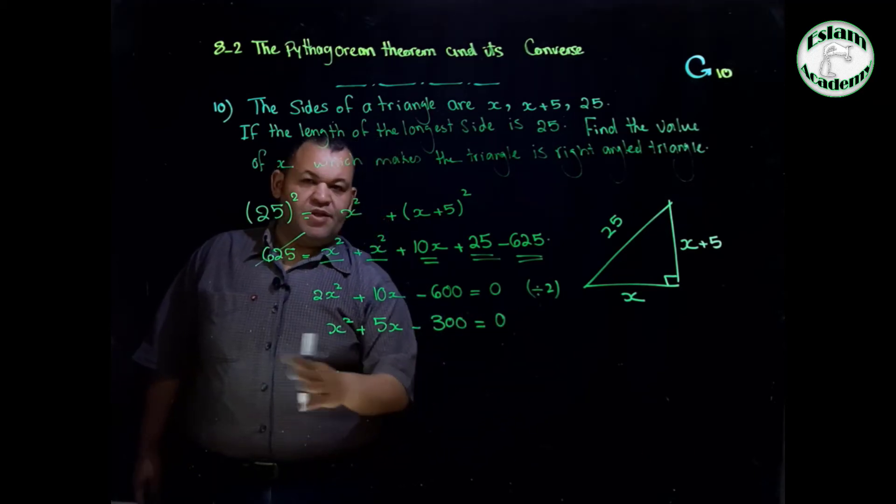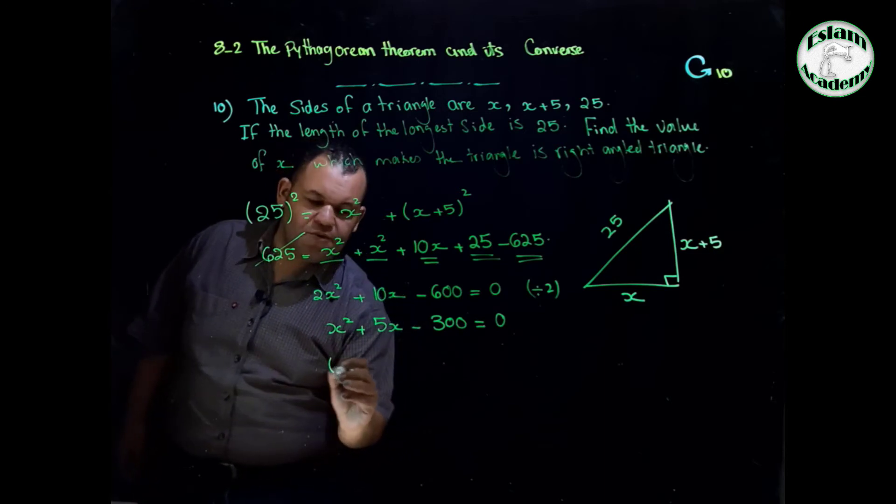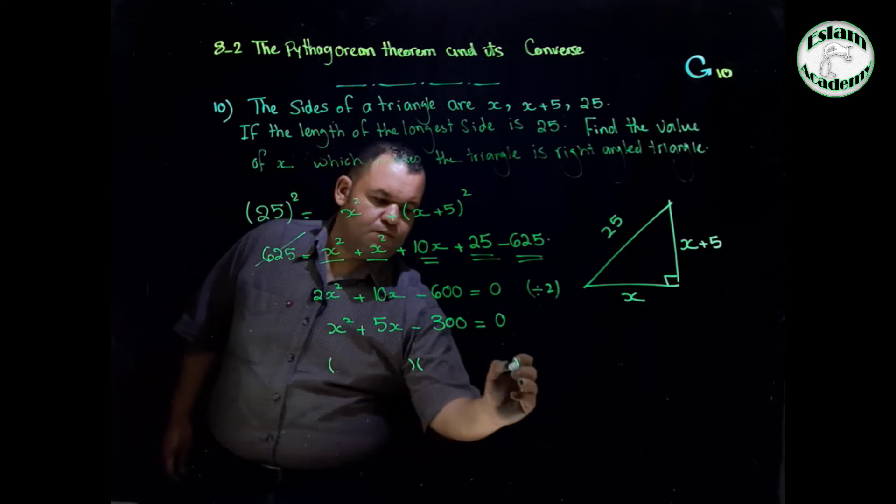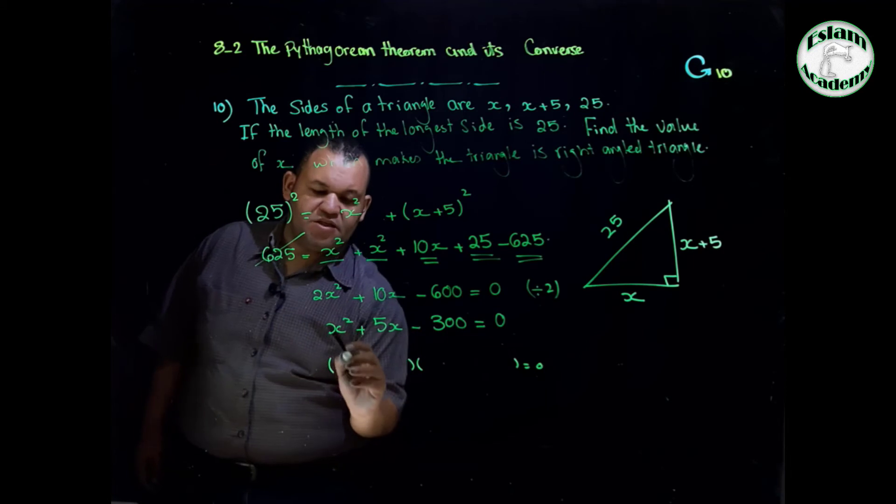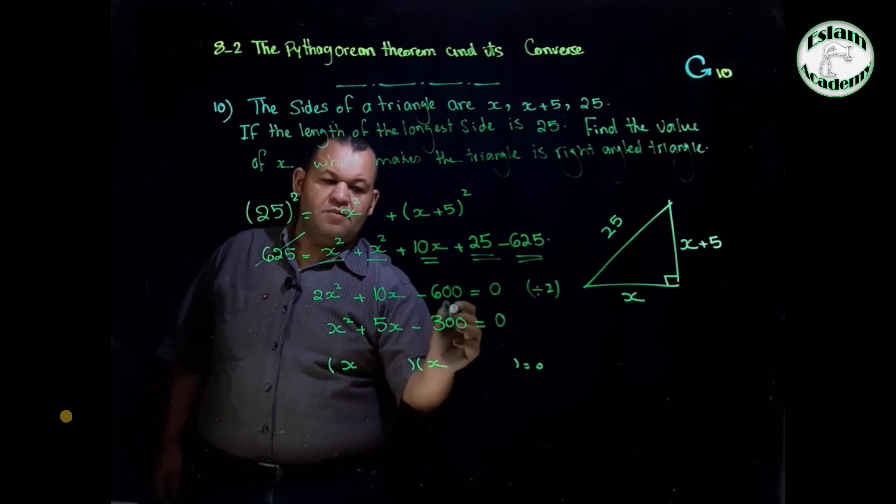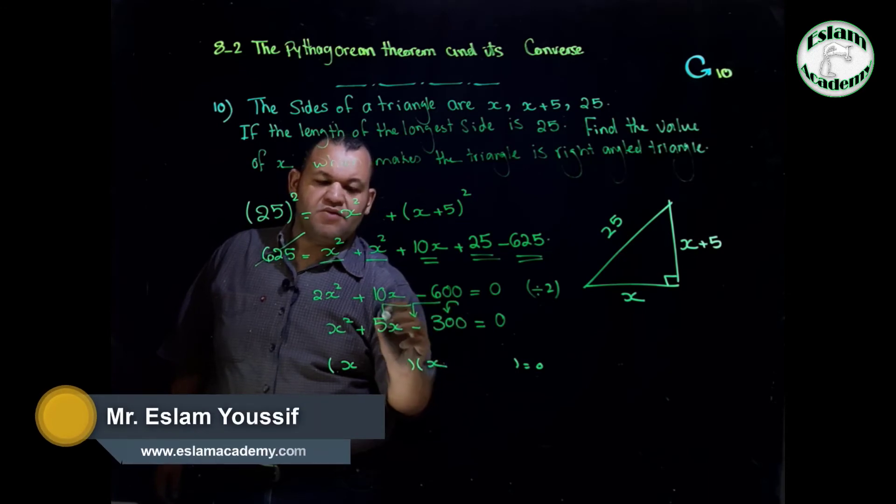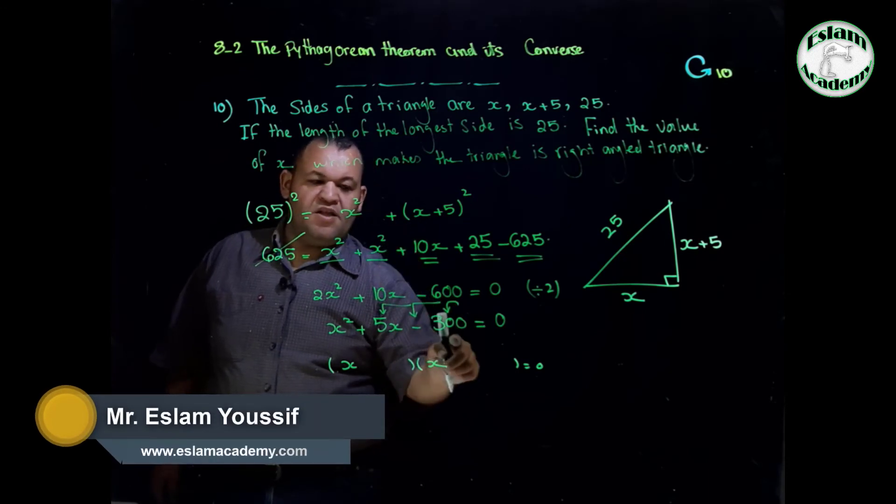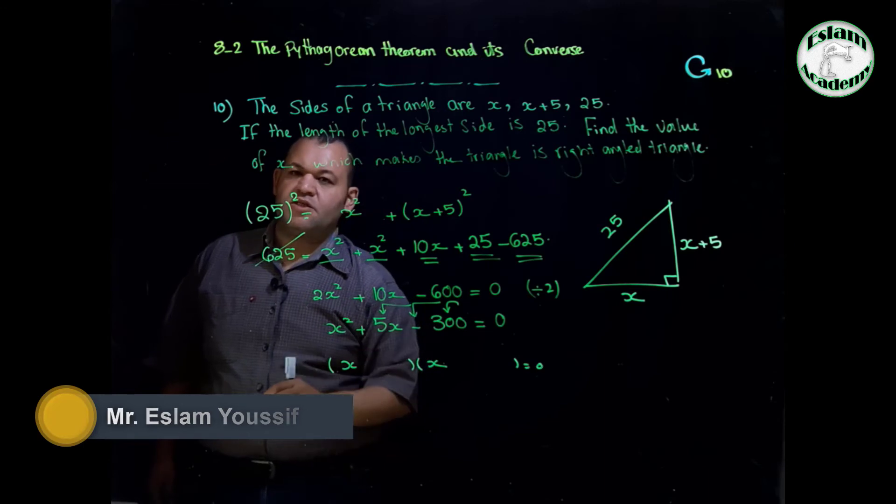Now we have a quadratic equation and there's no common factor so we open two brackets. That's x squared so it will be x and x. I need two numbers: if you multiply them the answer is 300, if you subtract them the answer is 5.